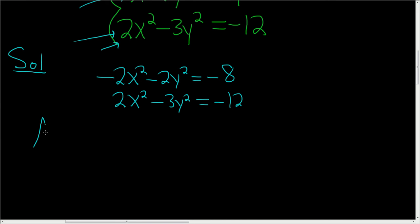So add. When we do that, these cancel. And here we get negative 5y squared. And here we end up with negative 20.